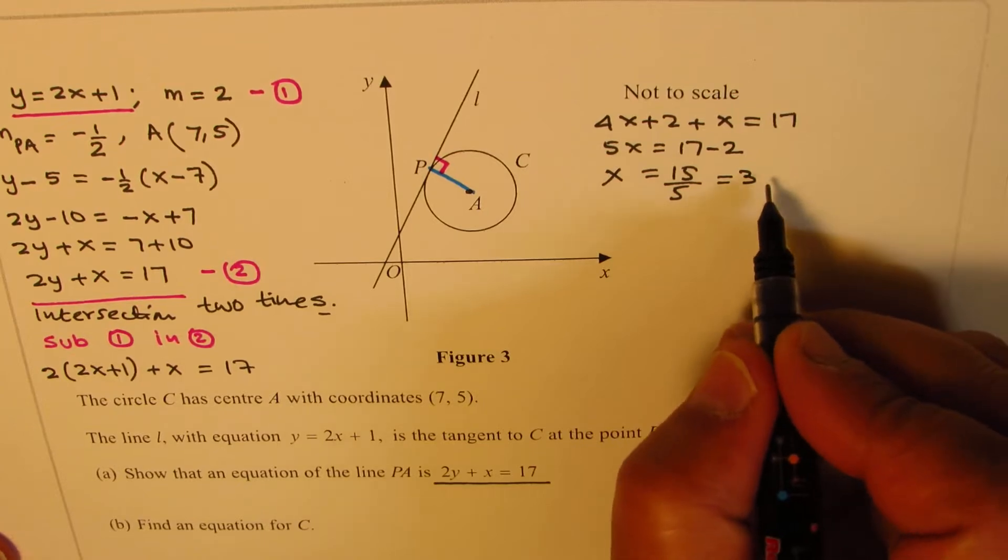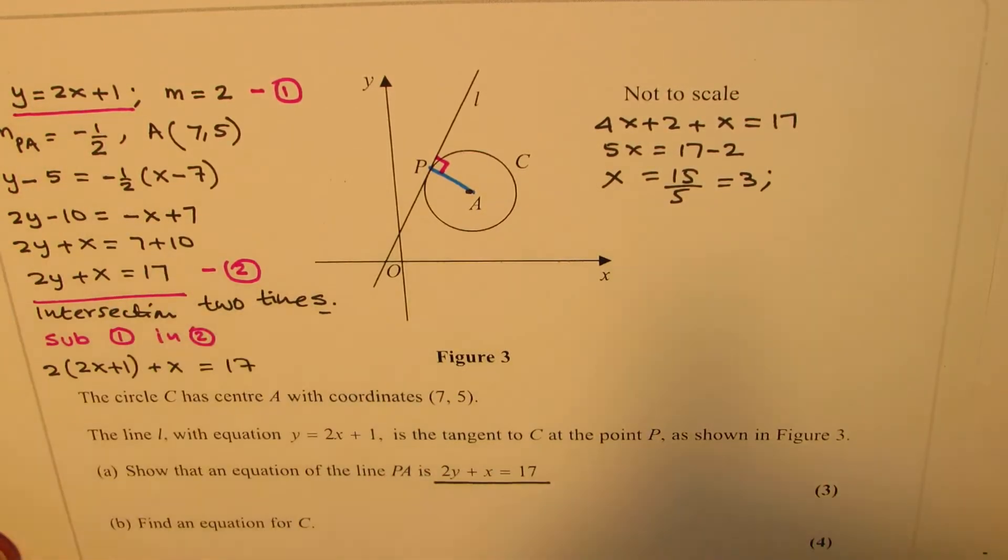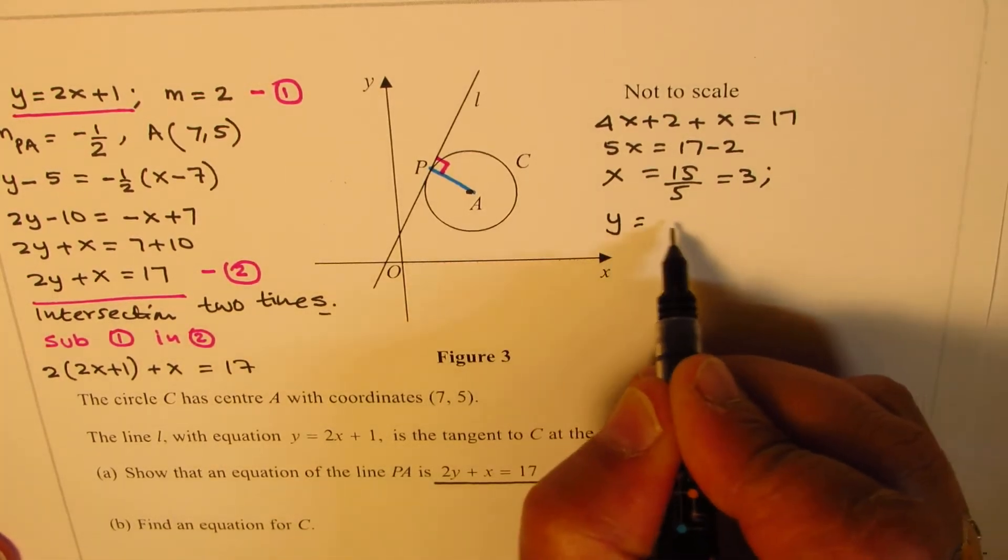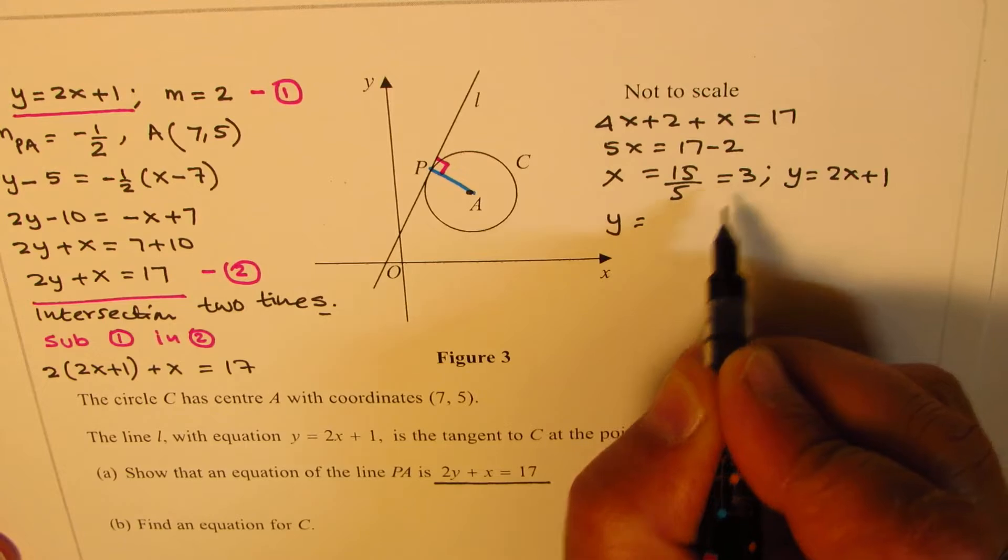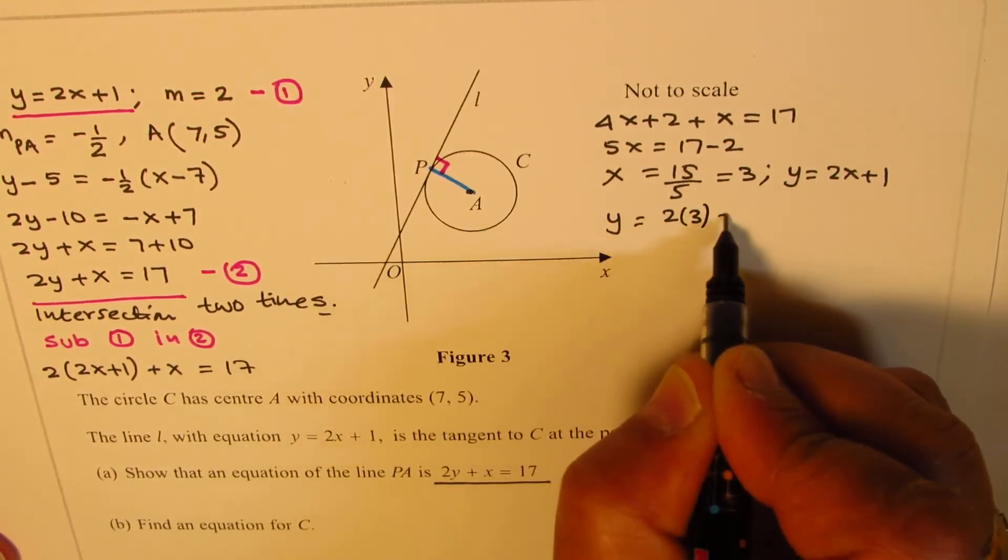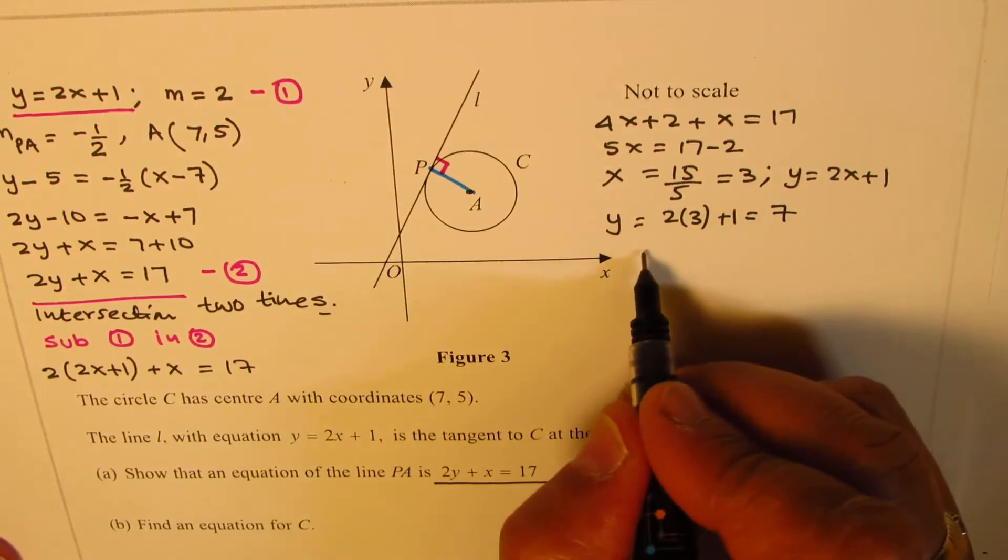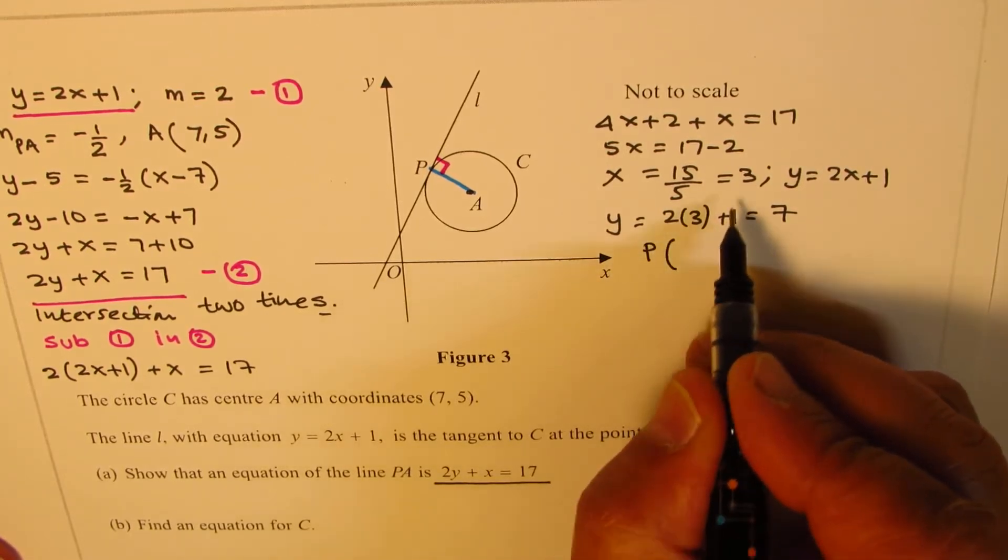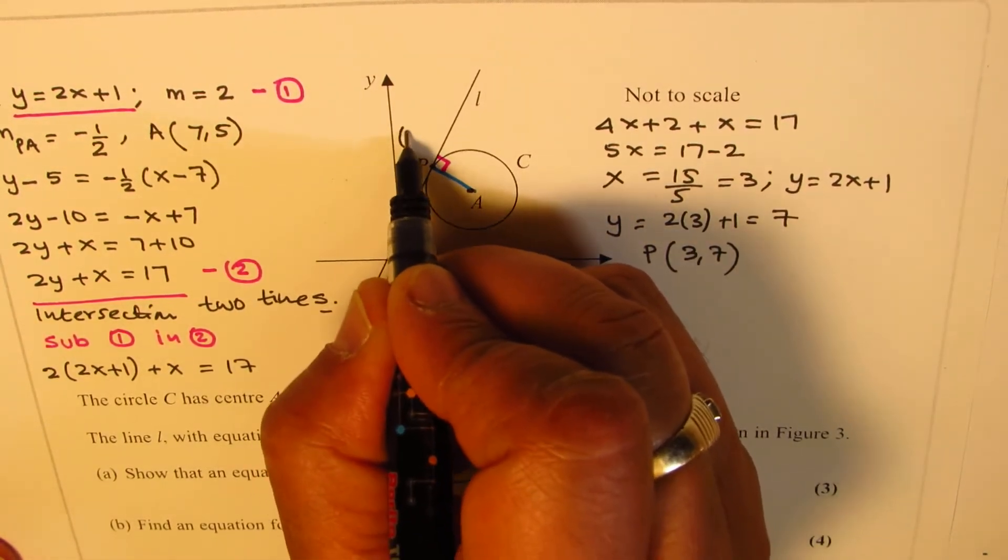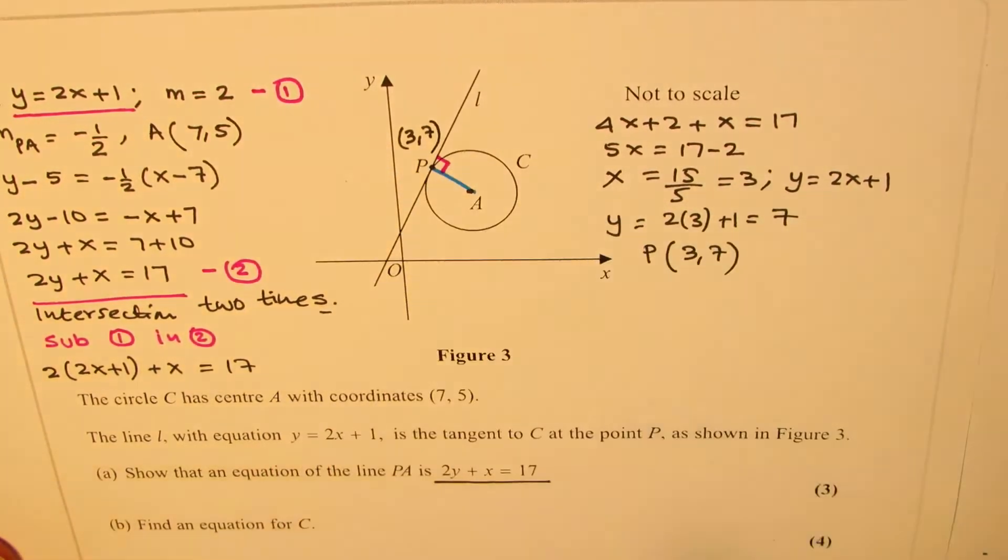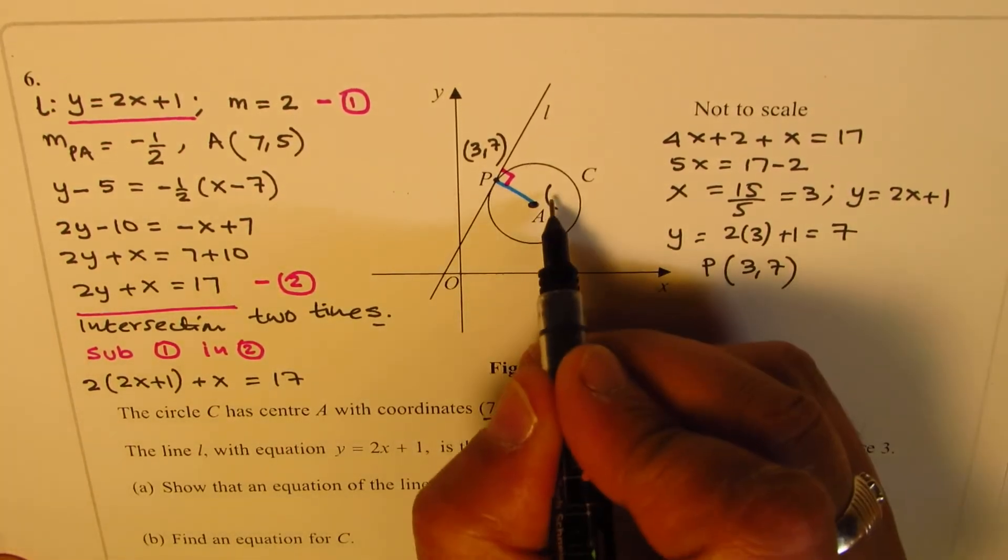To find the value of y, we use y = 2x + 1. Substituting x = 3, we get y = 2(3) + 1 = 6 + 1 = 7. So the coordinates for point P will be (3, 7). We got the coordinates for point P as (3, 7). We know the coordinates for point A are (7, 5).